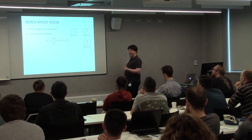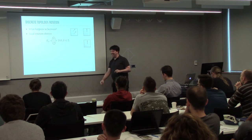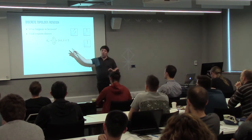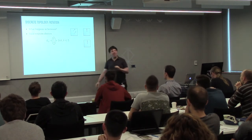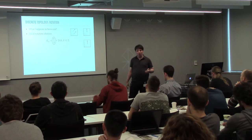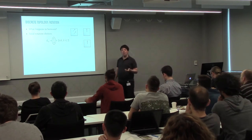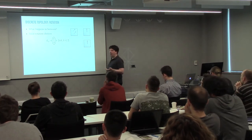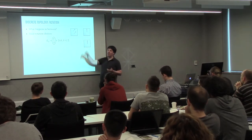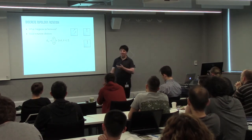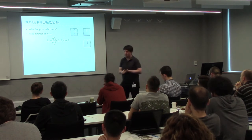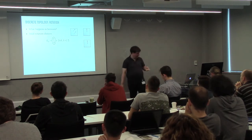We call the shortest rotation the principal choice — principal because it's always between minus pi and pi. If you have some kind of rotation and you take the shortest rotation, there's always this kind of choice.